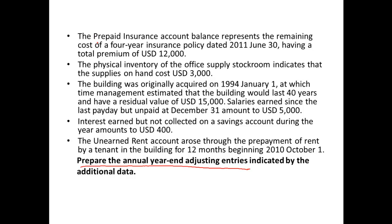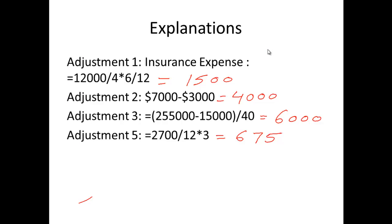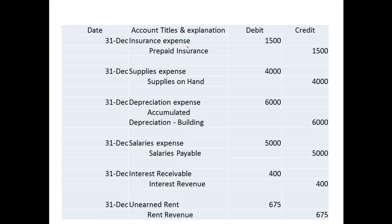The first adjusting entry is for insurance. The prepaid insurance account balance is given as $12,000, which belongs to a four-year policy period dated June 30, 2011. We proportionate this over six months — the relevant period for our year — which gives us $1,500. We debit insurance expense and credit prepaid insurance with $1,500.